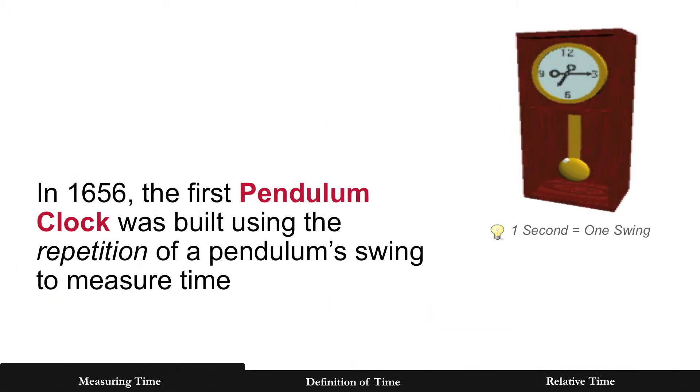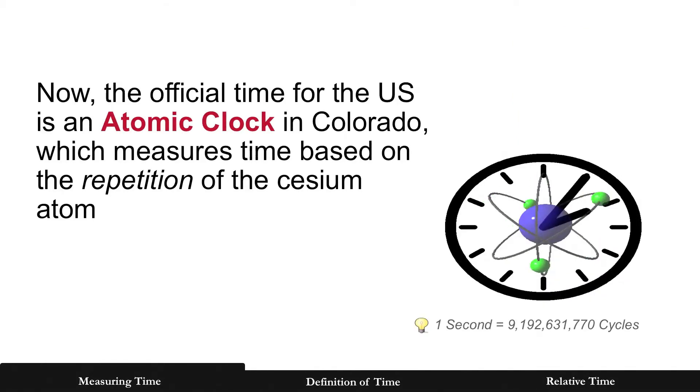In 1656, the first pendulum clock was built using the repetition of the pendulum swing to measure time. Now, the official time for the US is an atomic clock in Colorado, which measures time based on the repetition of the cesium atom.